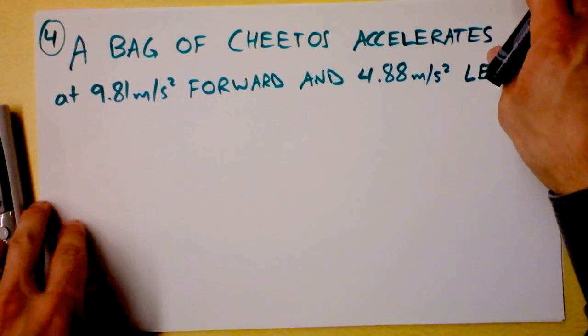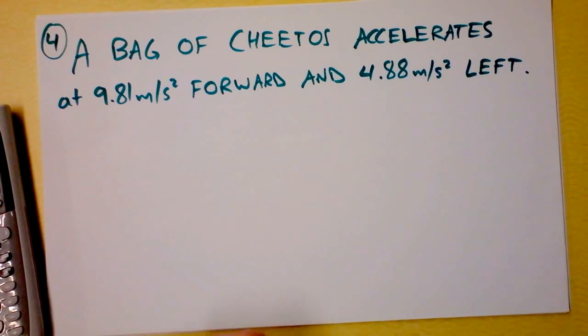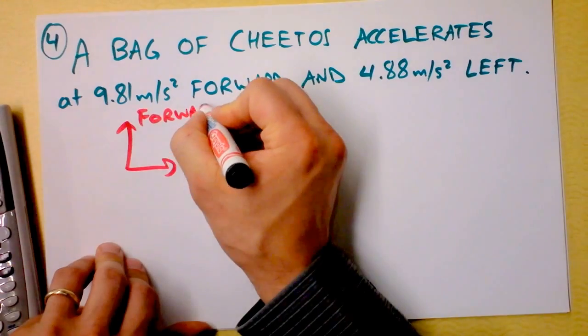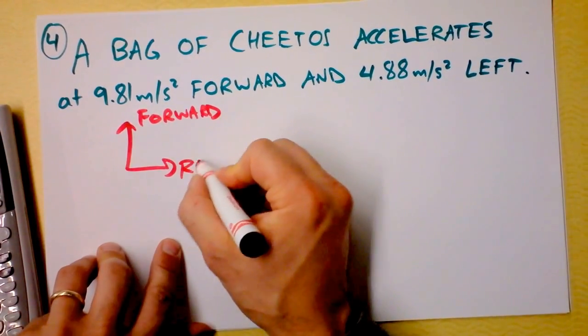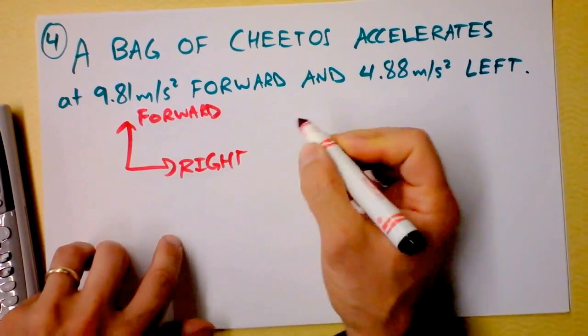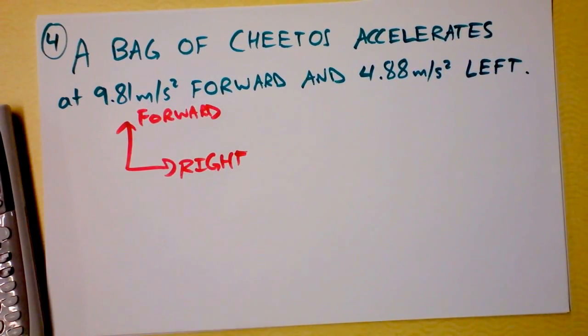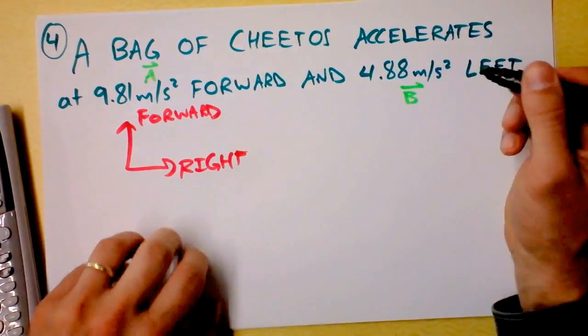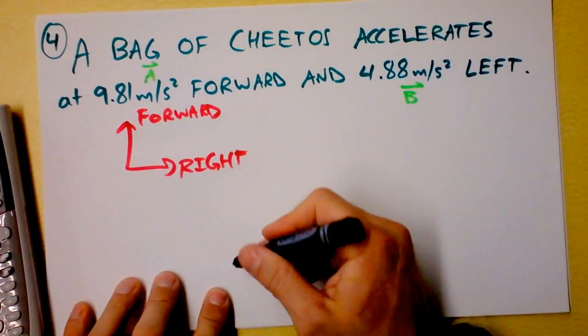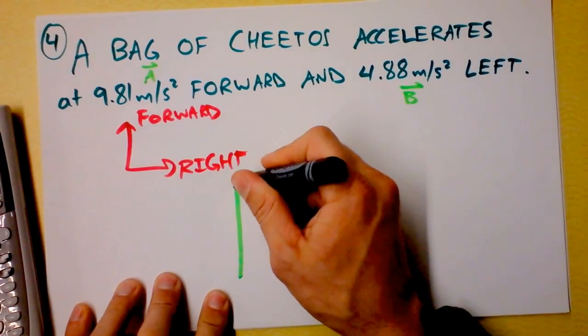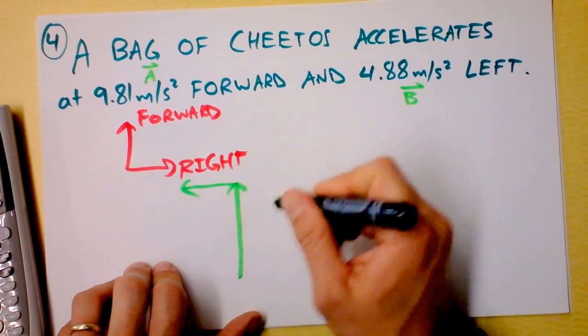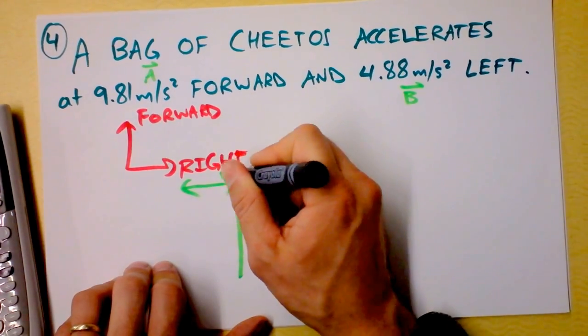Number four, a bag of Cheetos accelerates forward and to the left. This coordinate system is a little bit strange. I will write forward up here. It seems like it's a local coordinate system. And this guy right here, I will call to the right, because that's definitely not to the left. Let's do a brighter green, maybe an electric lime for this problem. I'm supposed to draw these two vectors. This guy I'm going to call A, and that guy I'm going to call B, and they're going to have to be at right angles to each other. So I first have a long vector that's forward, and then a shorter vector that's to the left. So here's vector A, and here's vector B.